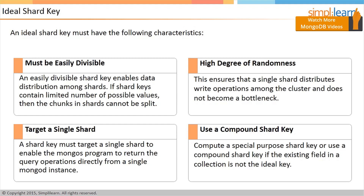Second, a shard key must possess a high degree of randomness. This ensures that a single shard distributes write operations among the cluster and does not become a bottleneck. Third, a shard key must target a single shard to enable the MongoS program to return most query operations directly from a single MongoDB instance. In addition, the shard key should be the primary field in queries. Fields having a high degree of randomness cannot target operations to specific shards.